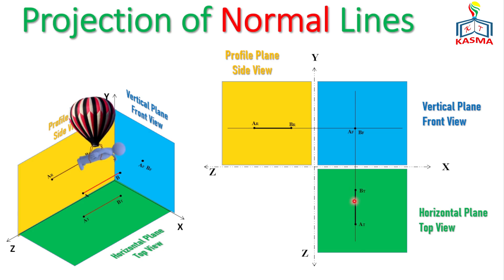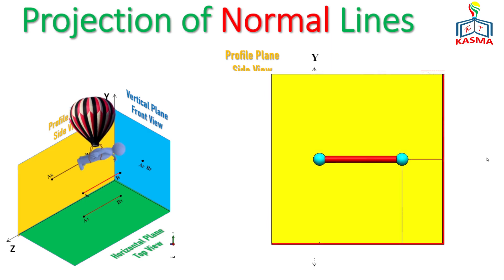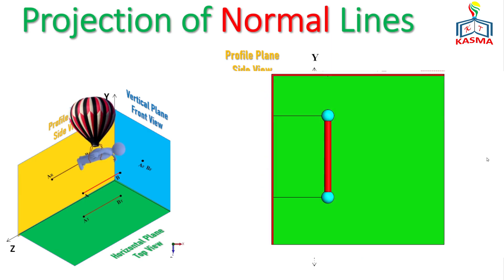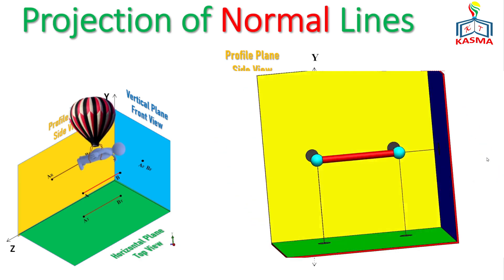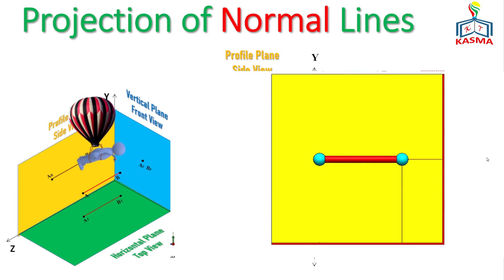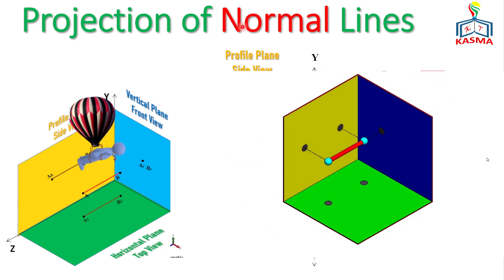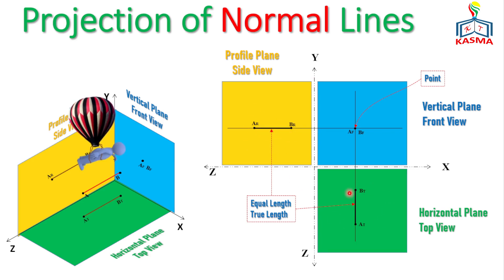The length of the side view and the height of the top view are equal. The animation clearly shows that the top view and side view lengths of this normal line are the same. From this we can conclude that a normal line will have a true-length projection on two views and a point projection on one view. It will have one point projection and two true-length projection lines — we call this a normal line projection.